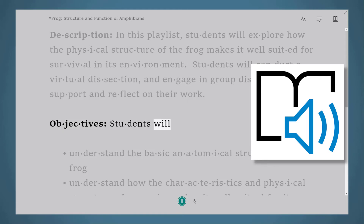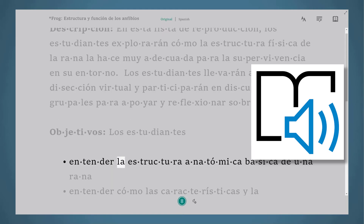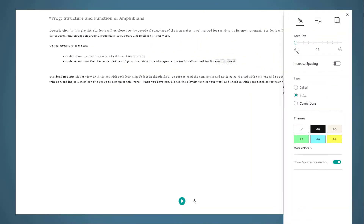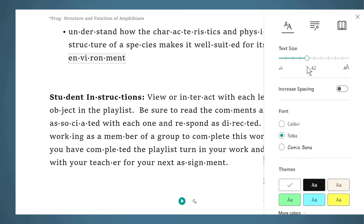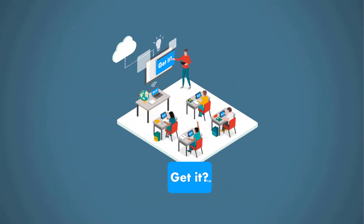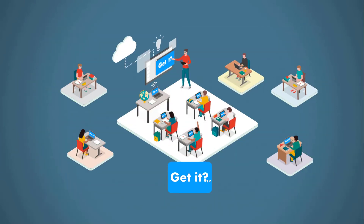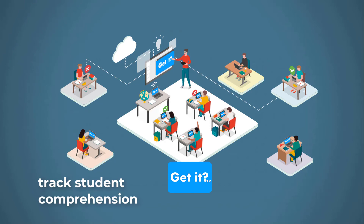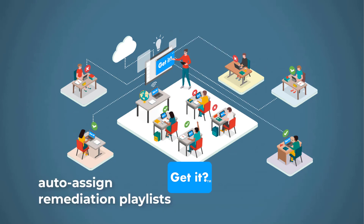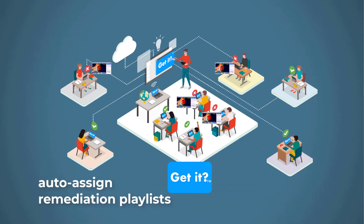For example: 'Objectives. Students will: Entender la estructura anatómica básica de una rana.' — and gives them customizable control of on-screen text. Playlists can also include the powerful Get It formative assessment tool for teachers, students, and parents to keep track of student comprehension and to automatically assign any necessary remediation playlists.